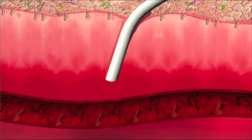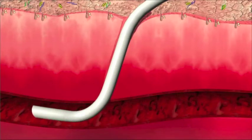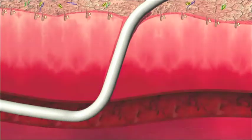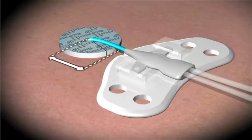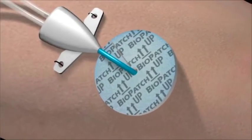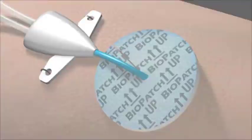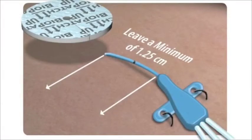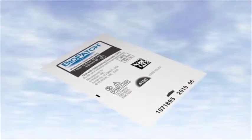Maximum sterile barrier precautions prevent cross-contamination of transient organisms and protect the skin preparation. Insert catheter into prepared skin area. When fixing the catheter in place with a suture or sutureless securement device, leave enough room for BioPatch to lie completely flat against the skin. Leave approximately a half inch or 1.25 centimeters.